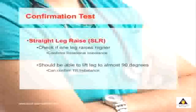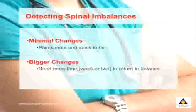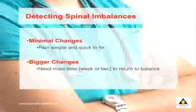Secondly, people should be able to lift their leg up to almost 90 degrees. If you find that you can't lift your leg to 90 degrees, and both legs are similar, then you may have those tilt-type imbalances. These two simple tests indicate that there are imbalances in your spine — the greater the change, the more the imbalance.